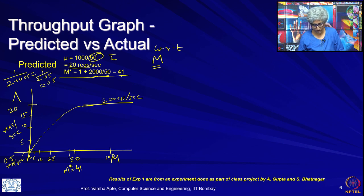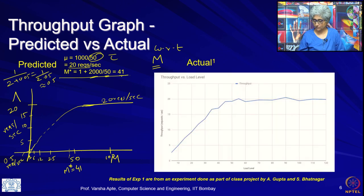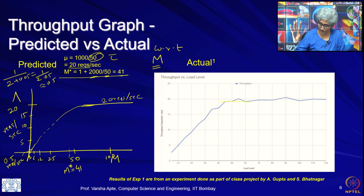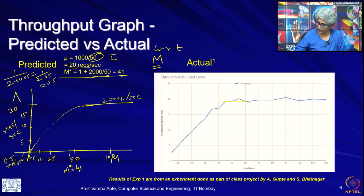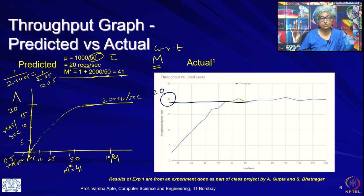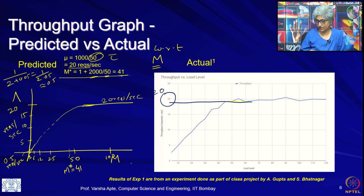Let us now see the actual graph. The maximum is very close to 20 requests per second — very close to what we predicted theoretically. For the rest of the curve, as I said, we do not really have a handle on it.